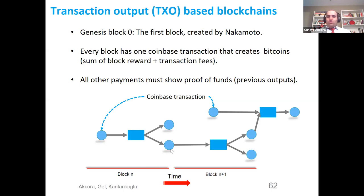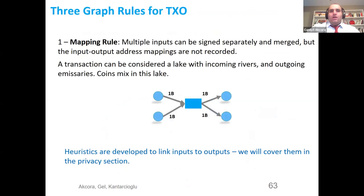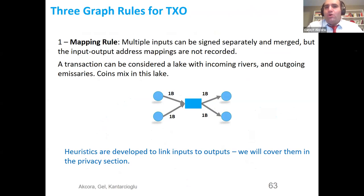I want you to be familiar with this graph. From left to right, time increases: block N comes before block N+1, and the network always grows to the right. In UTXO-based blockchains, we have three graph rules. The first is called the mapping rule: multiple inputs can be funded separately by different users and merged, but the input and output address mappings are not recorded by protocol.